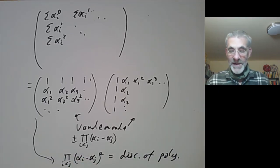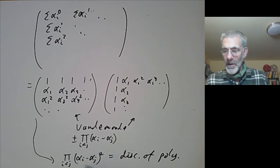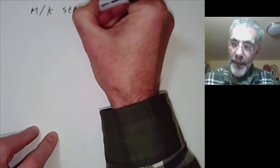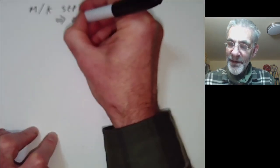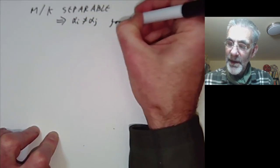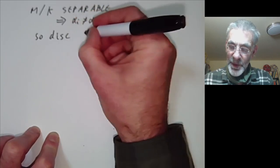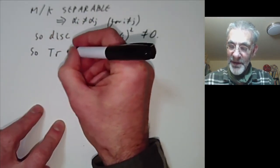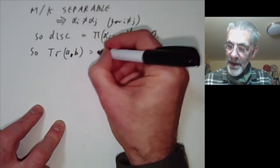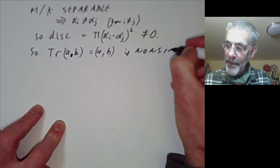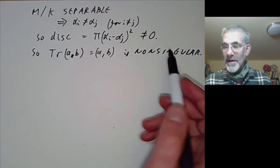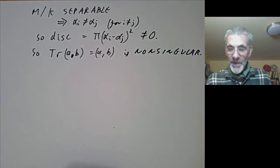That's the minimal polynomial of α. So we've shown the discriminant of a field extension is essentially the same as the discriminant of the minimal polynomial of a generating element. In particular, if M over k is separable, this implies α_i ≠ α_j for i ≠ j, so the discriminant — the product of (α_i − α_j)² — is non-zero. Therefore the bilinear form (a,b) = trace(ab) is non-singular. It's not difficult to check that, conversely, if the trace form is non-singular, then the extension is separable.